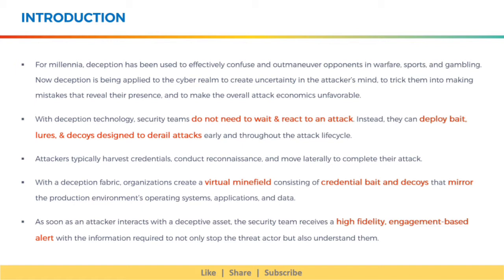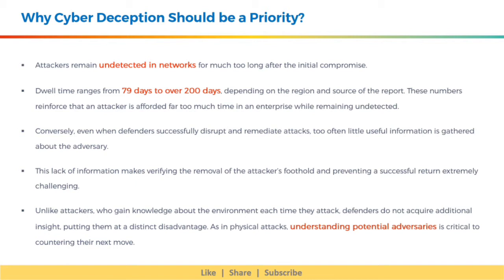Let's discuss why cyber deception should be a priority. Attackers remain undetected in networks for much too long after the initial compromise. Dwell time ranges from 79 days to over 200 days, depending on the region and source of the report. These numbers reinforce that an attacker is afforded far too much time in an enterprise while remaining undetected. Conversely, even when defenders successfully disrupt and remediate attacks, too often little useful information is gathered about the adversary. This lack of information makes verifying the removal of the attacker's foothold and preventing a successful return extremely challenging.